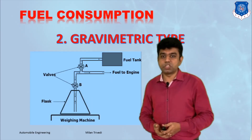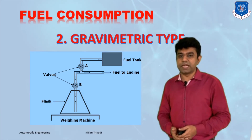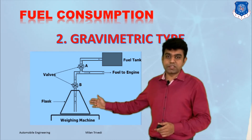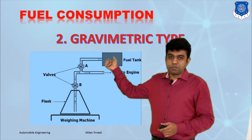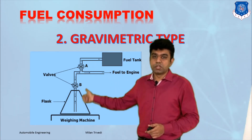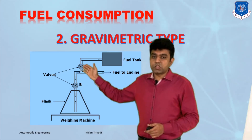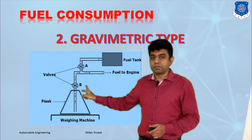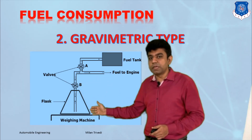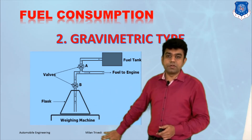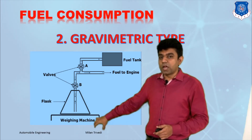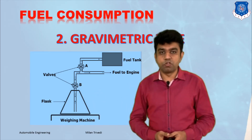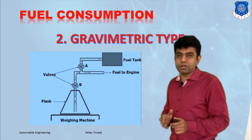The second method is the gravimetric type, in which we directly measure the mass of fuel supplied to the engine. A weighing machine holds a flask filled with fuel from the tank by opening valve A and valve B. Once filled, valve A is closed and only valve B is kept open. The engine is started and fuel passes only from the flask. The time taken to consume a recorded weight of fuel is measured, giving the direct value of mass flow rate. These are the two methods to evaluate fuel consumption.